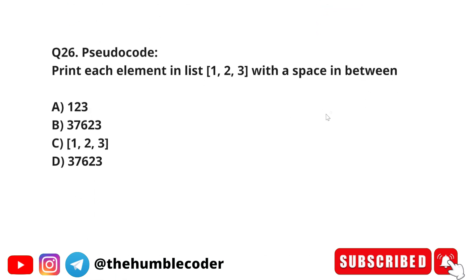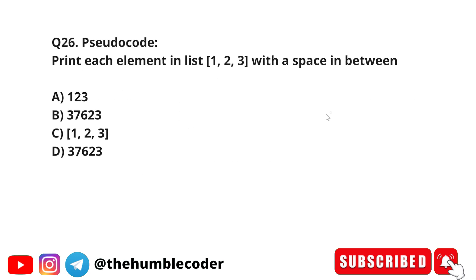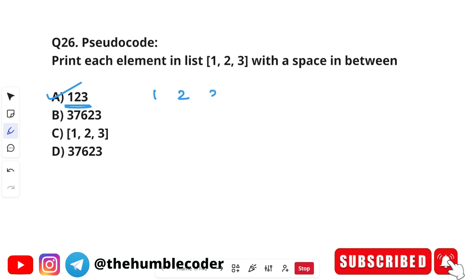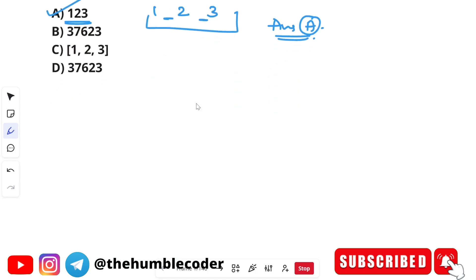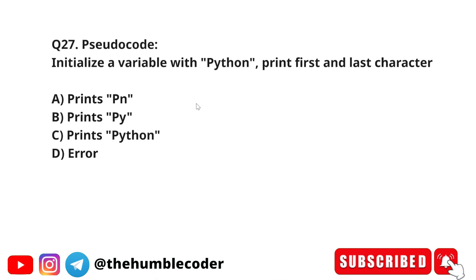Next pseudo code question: print each element in the list [1, 2, 3] with a space in between. What is the output? The output will be 1 2 3. The pseudo code suggests printing the results with spaces, resulting in 1 2 3. The most matching answer is option A.